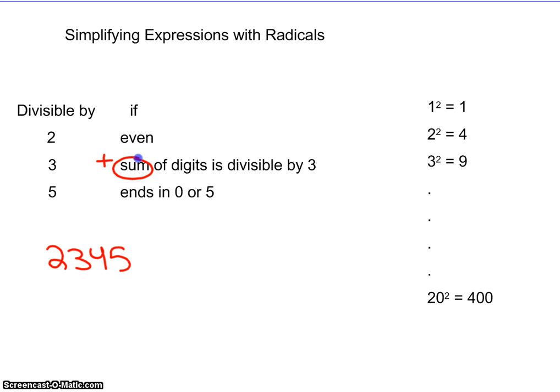For instance, if I took a number like 2345 and I want to know if that's divisible by three, I would add up my digits and get fourteen. I could go one more step and continue to add those digits together until it's a one-digit value. Since five is not divisible by three, 2345 is not divisible by three.